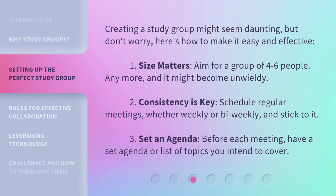Creating a study group might seem daunting, but don't worry. Here's how to make it easy and effective. 1. Size matters — aim for a group of 4 to 6 people; any more and it might become unwieldy. 2. Consistency is key — schedule regular meetings, whether weekly or bi-weekly, and stick to it.